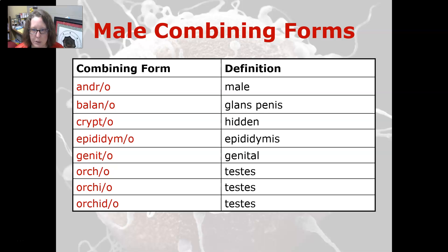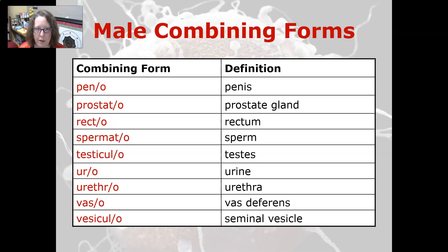Crypto means hidden, epididimo means epididymis, genito means genitals, orco, orcio, and orchido all mean testes, pino means penis, prostato means prostate gland, recto means rectum, spermato means sperm, testicular means testes, uro means urine, urethro means urethra, vaso means vas deferens.